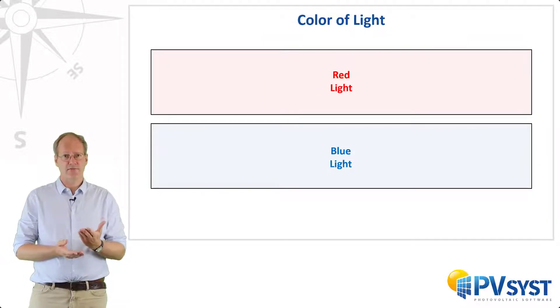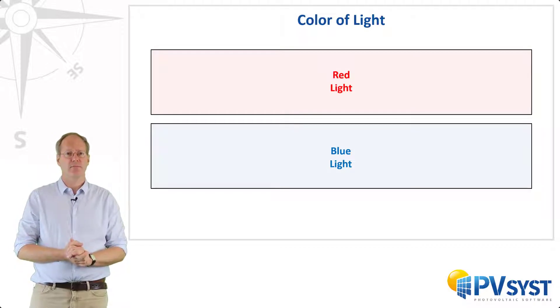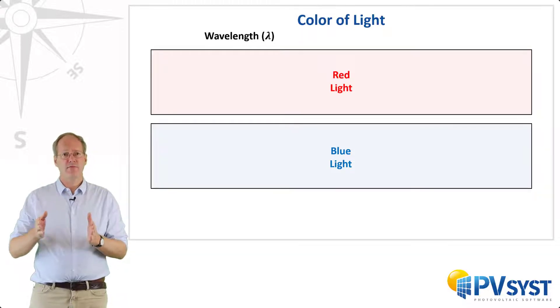Another light attribute that is described differently when using a wave or a particle is the color of light. How can we differentiate between, for example, red and blue light using wave and particle properties? When considering light as a wave, we use a wavelength to differentiate between different colors of light. The wavelength is the distance between one peak of the wave to the next.